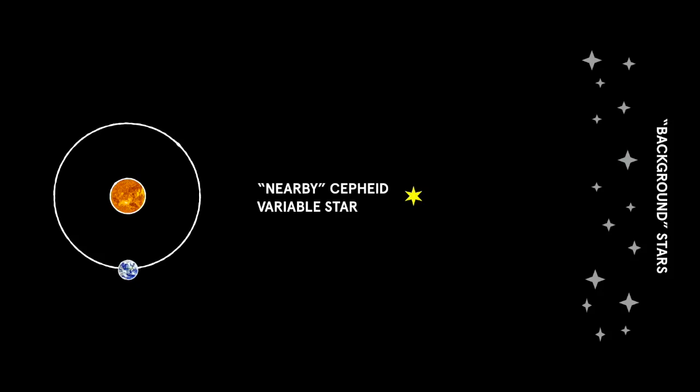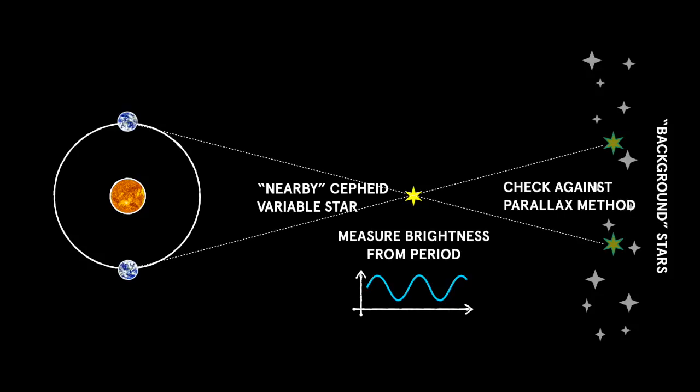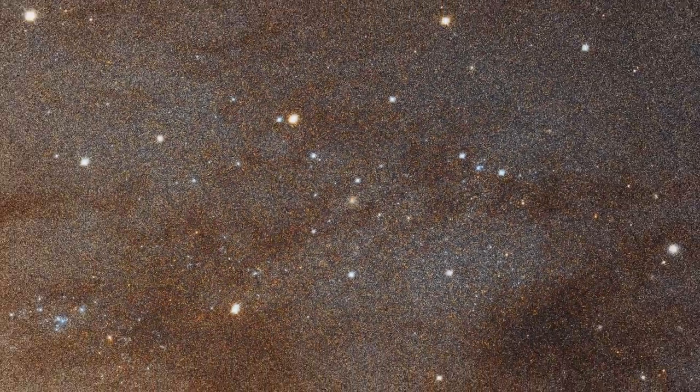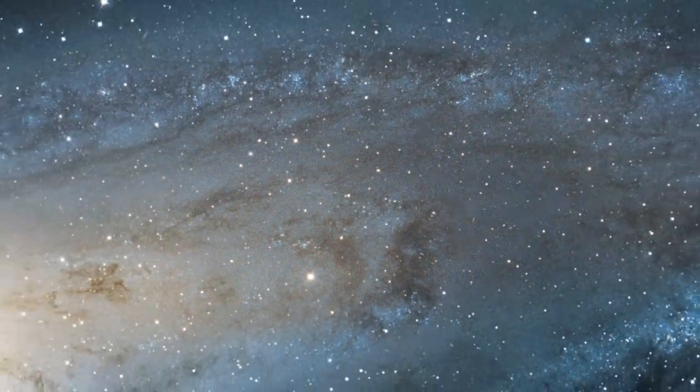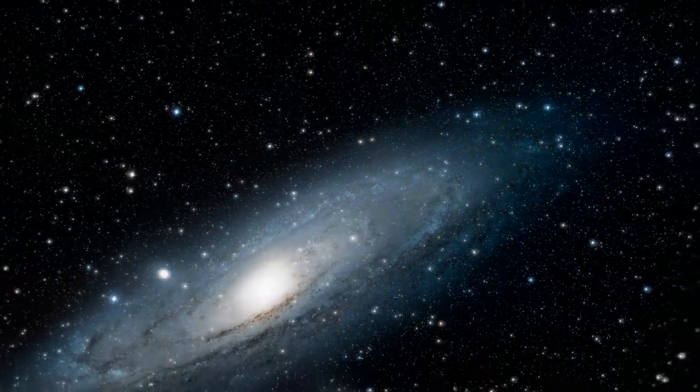And we can make sure we're doing it right by checking our answer for nearby Cepheid variable stars against the distance we get using the parallax method. The advantage is that because Cepheid variable stars are very bright, we can use them to see much further away. We can measure the distance to nearby galaxies.